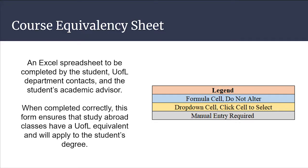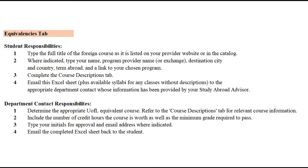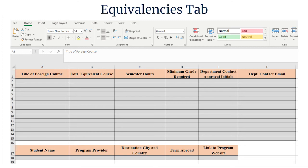We adapted the course equivalency sheet to meet the needs of a virtual world. The form is now an Excel spreadsheet that can easily be completed by relevant parties who may be working from home. The first tab of the spreadsheet provides instructions. The Equivalencies tab is a joint effort by the student and the appropriate UofL department contacts who determine the UofL equivalent course for each foreign class. Students will be given the department contact name and email address by their study abroad advisor. Students should fill in the Title of Foreign Course column and type in their name, program provider, destination city and country, the term abroad, and a link to the program website.